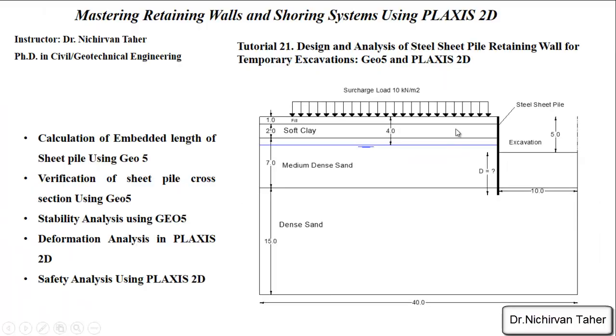The example will be like this. As you can see, we have this soil stratigraphy and boundary conditions. We have four soil layers: one meter fill, two meters soft clay, seven meters layer as medium dense sand, and fifteen meters as dense sandy soil.